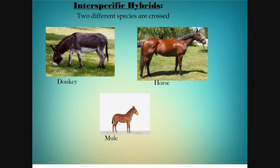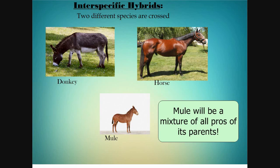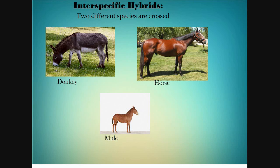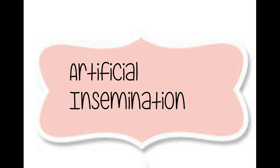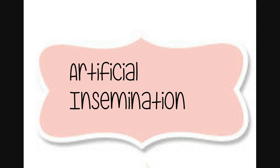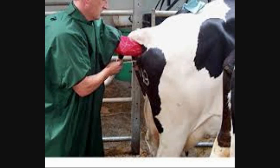In interspecific hybrids, two totally different species are crossed and the progeny obtained may contain qualities of both parents. An example is the mule: a horse has great speed and mobility, and a donkey is helpful in carrying loads. When both were crossed, the mule came into existence, which had both qualities.